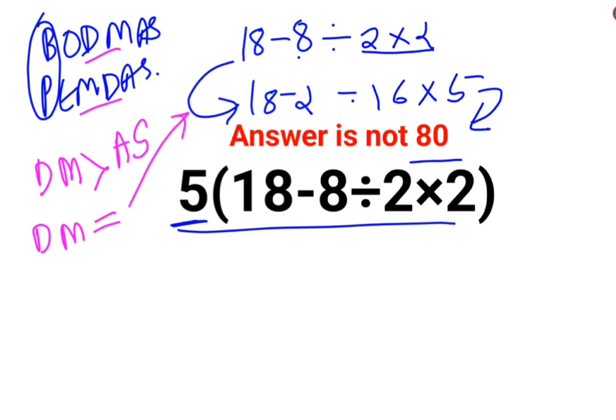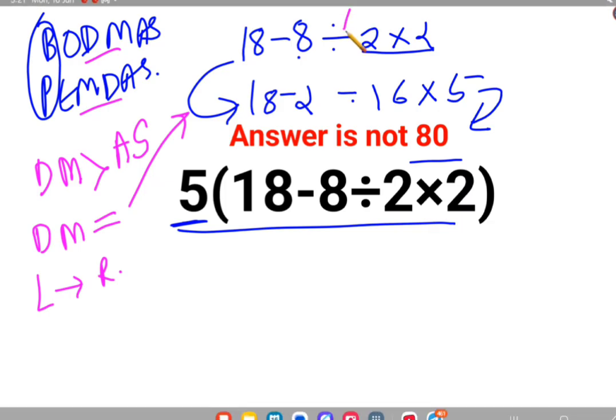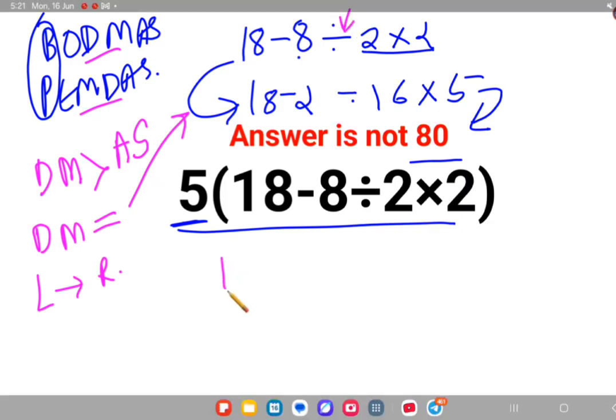So in sums like these, what you should do, you go from left to right. Whatever operation happens first on your left hand side has to be done first. So let's do this again.